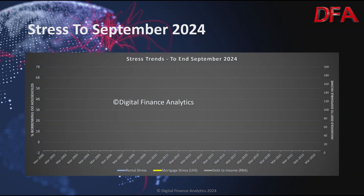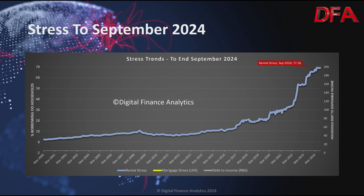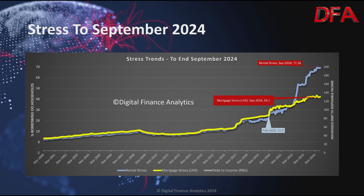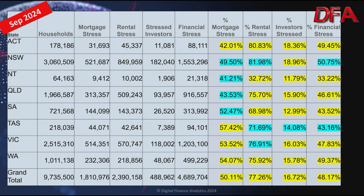For those who missed the previous show: rental stress was high at 77.26% of all households in the rental sector — never been higher. Mortgage stress is just over half at 50.1%, compared with 32.9% back in February 2020. This translates to significant rises in many areas, shown by state for September 2024, highlighted in yellow for higher than last month and blue for lower, covering mortgage stress, rental stress, stressed investors, and financial stress.